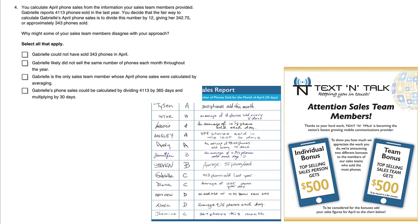You calculate April phone sales from the information your sales team members provided. Gabrielle reports 4113 phones sold in the last year. You decide that a fair way to calculate Gabrielle's April phone sales is to divide the number by 12, because we have the entire year. Dividing by 12 to get the monthly amount gives her 342.75 sales, or approximately 343 phones sold.